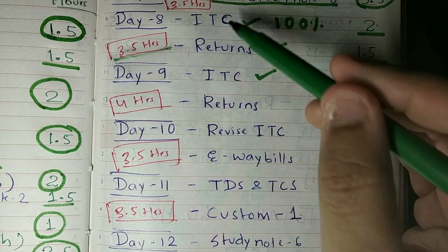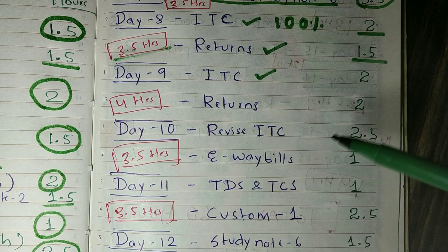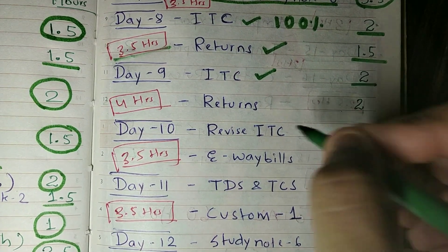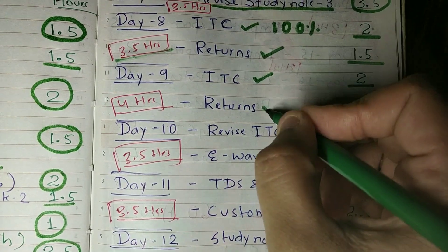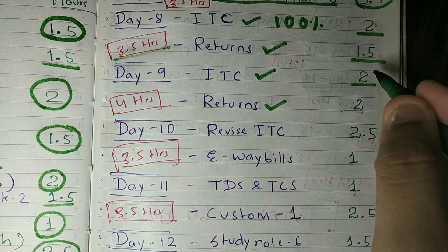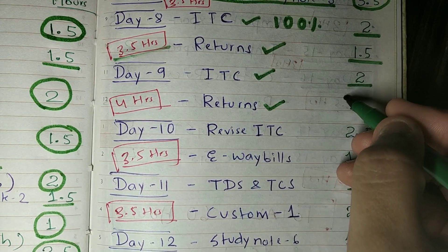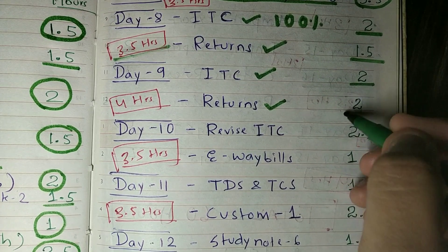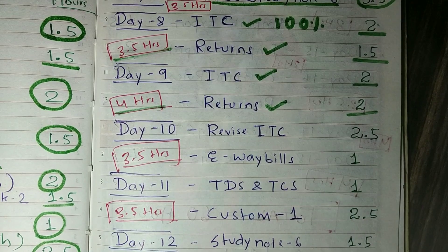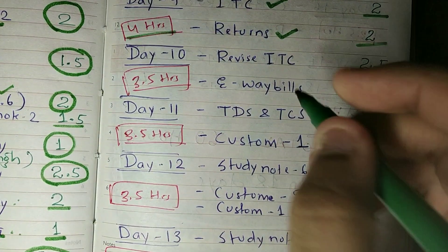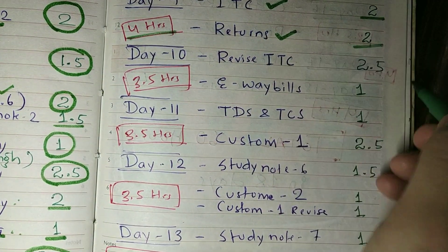We will continue on day 9 because ITC alone will take 2.5 hours again, and returns will also be covered. Day 9 will take 4.5 hours in total. Coming to day 10, you have to revise ITC.